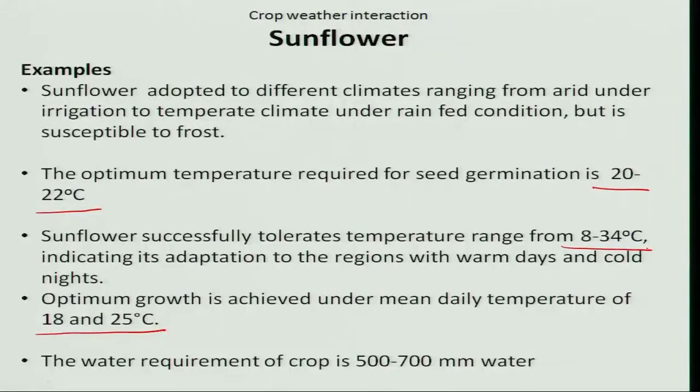Let us see the crop-weather interaction during the flowering to pollination stage. This phase is a highly critical period for water requirement and it will affect flowering and pollination. If the crop experiences rainfall for a period of one week, it will adversely affect the pollination process because pollination is triggered by insects in the case of sunflower. Therefore, it should not coincide with the rainy season. Moisture is also very critical during the flowering phase — 20 days before flowering and 20 days after flowering. That period is highly critical for moisture stress.